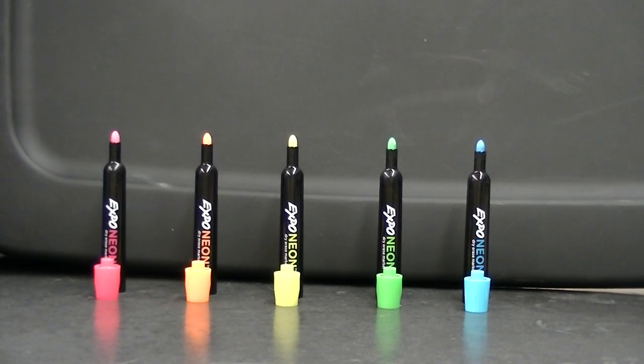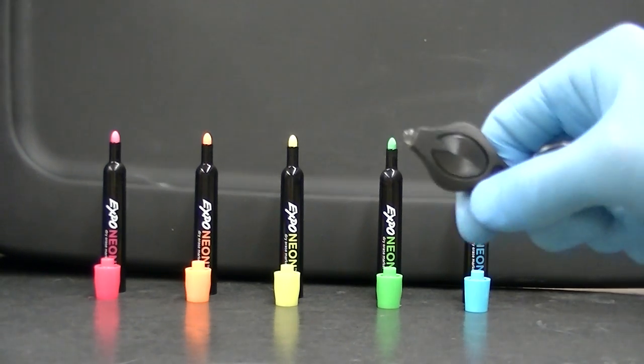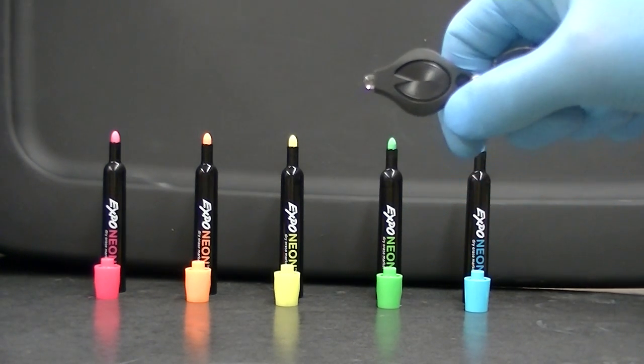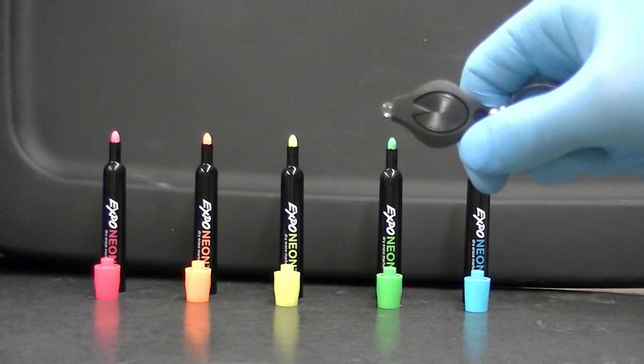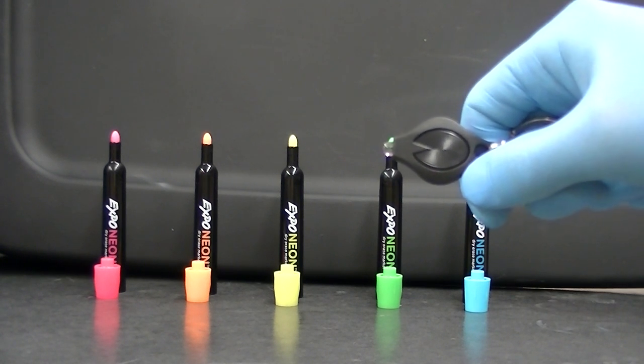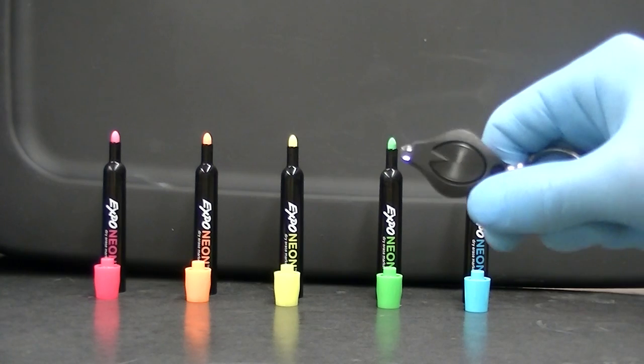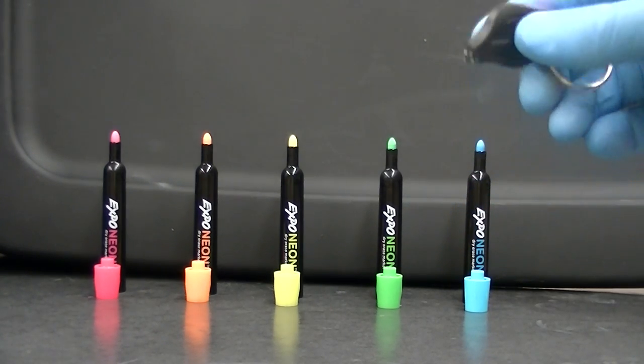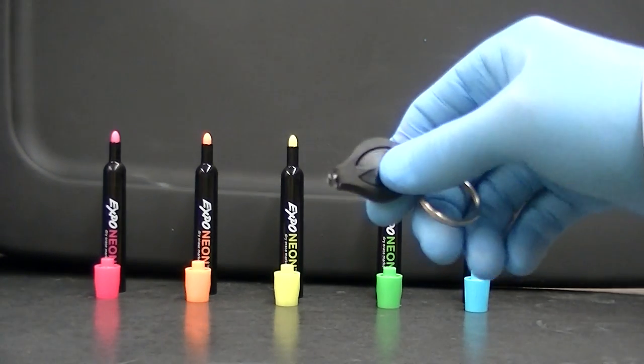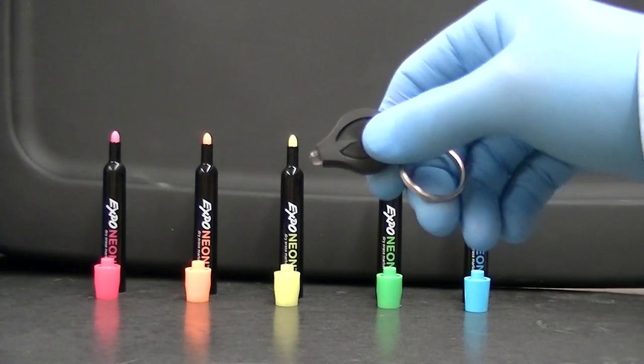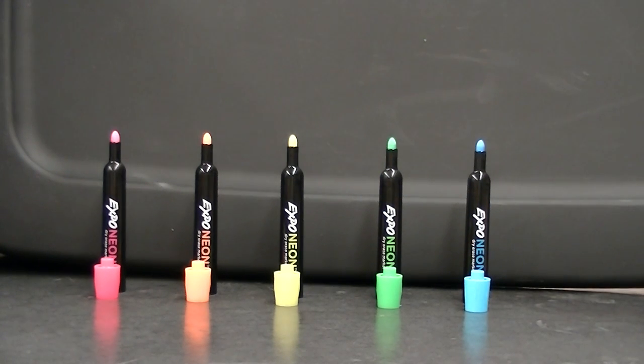Here are some fluorescence and chemiluminescence experiments you can do with Expo Neon dry erase markers. You'll also need a Photon Micro Light. The one you'll need emits light at 405 nanometers, which is violet light. It also emits a little bit of ultraviolet light, so it acts like a black light. You can purchase these online fairly inexpensively, 15 to 20 bucks or less.